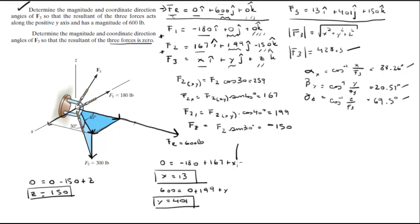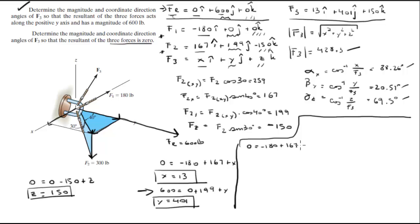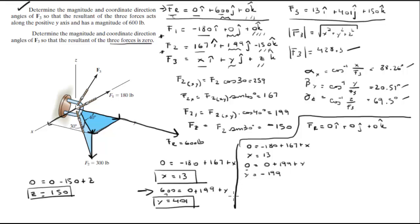So when building the equations for the second problem, F of R equals 0 i plus 0 j plus 0 k. The first equation gives x equals 13 still. The second equation: 0 equals 0 plus 199 plus y, making y equal to negative 199. The last equation remains the same, giving z equals 150.